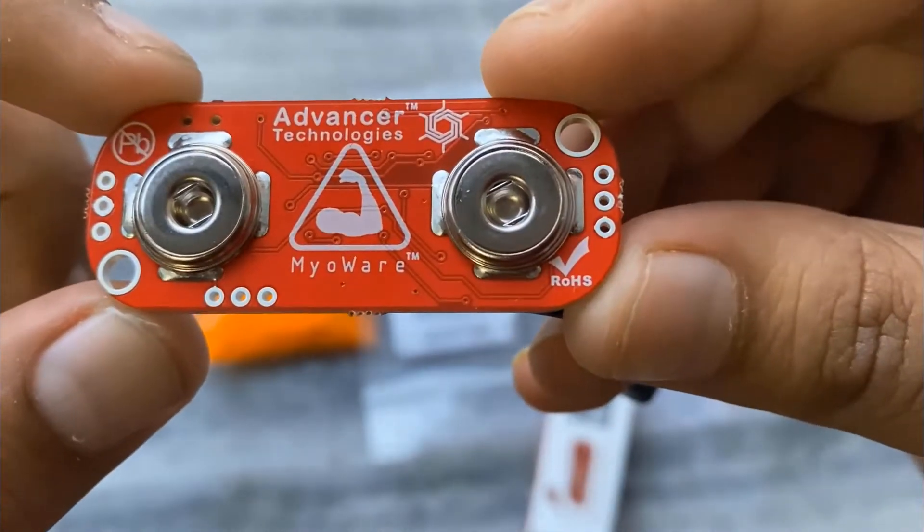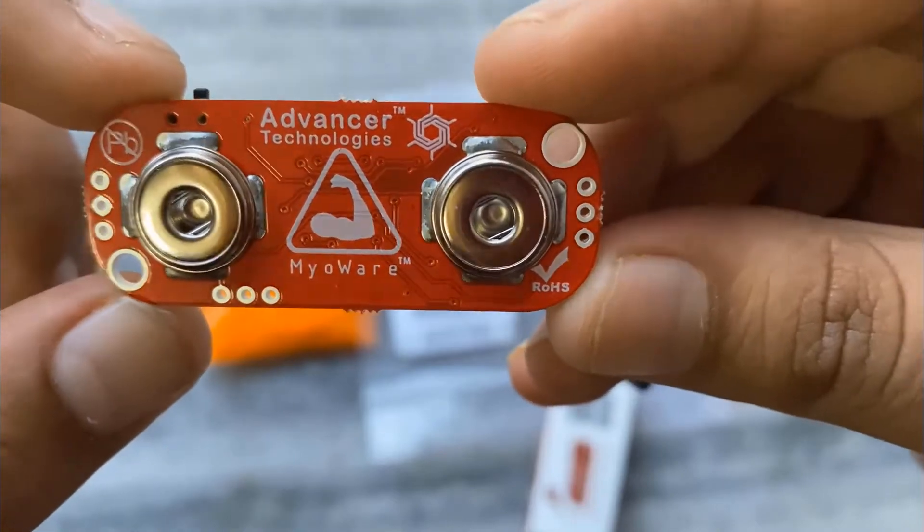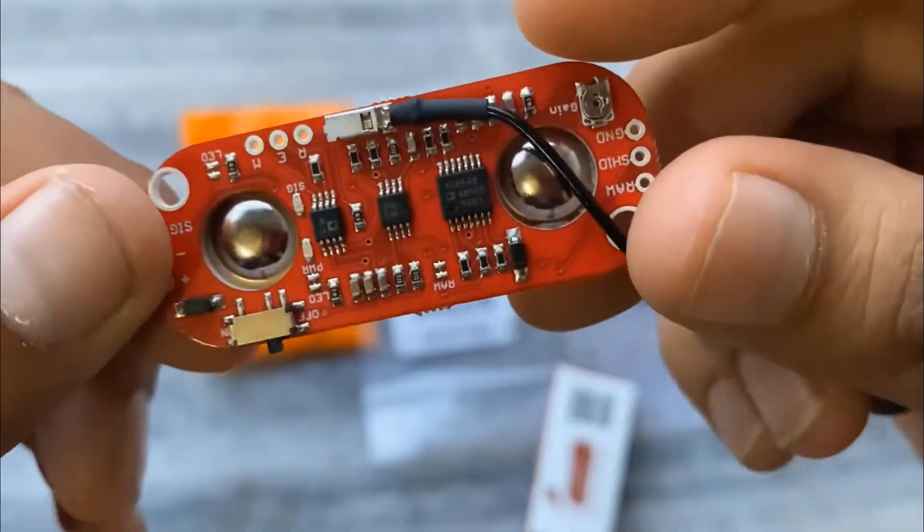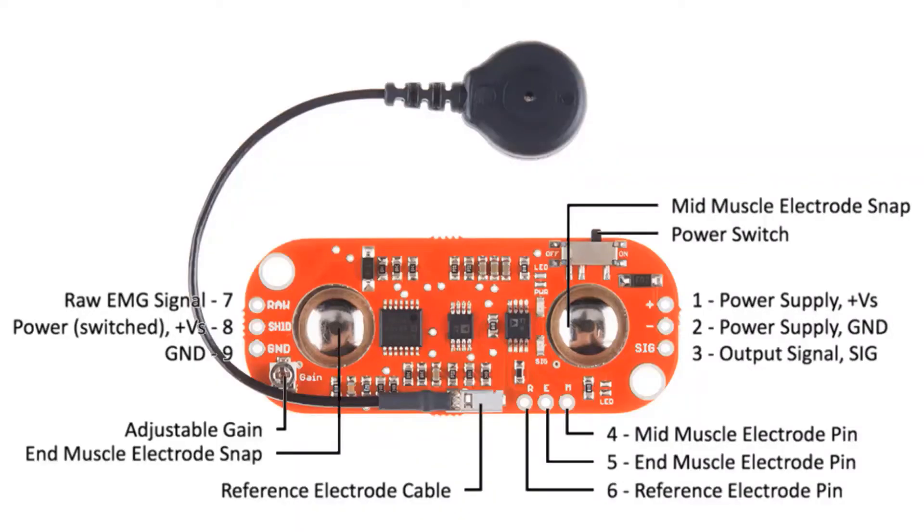Well, on the back side, there are connectors for two electrode pads. So, as explained earlier, the R, E, M pins are the mid muscle, end muscle, and reference electrode pin. To learn more about these board parts, visit the link in the description.